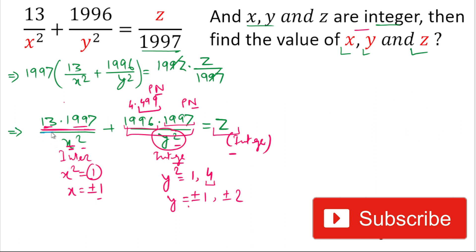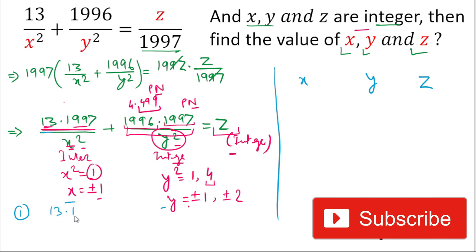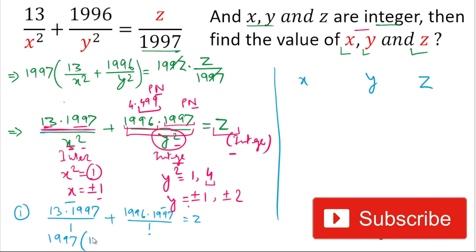We'll put the values of x and y in tabular form. If we put x as 1 or −1, the whole term value will be the same. Likewise if we put y as ±1 or ±2, the result will be the same in sign. For x = 1 and y = ±1: the equation becomes 13 × 1997 divided by 1², plus 1996 × 1997 divided by 1, equal to z. We can take 1997 as common, leaving 13 + 1996 = 2009, so z = 1997 × 2009.